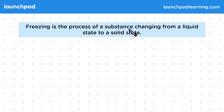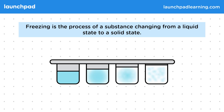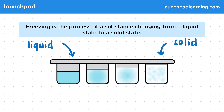Freezing is the process of a substance changing from a liquid state to a solid state. For example, imagine freezing water in an ice tray. On the left we have liquid water, and on the right the water is formed into solid ice, which is formed after freezing.